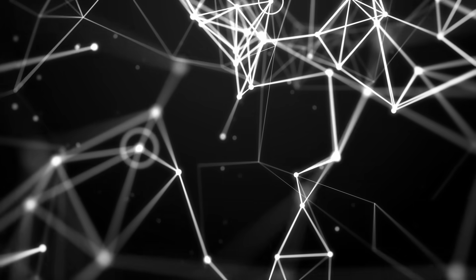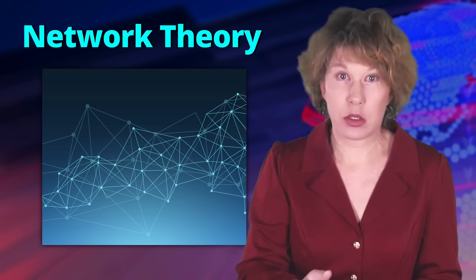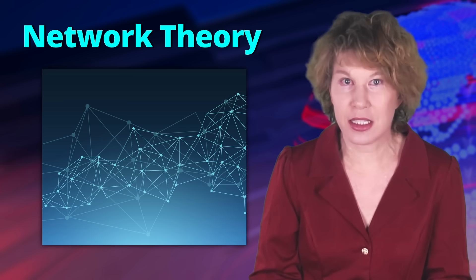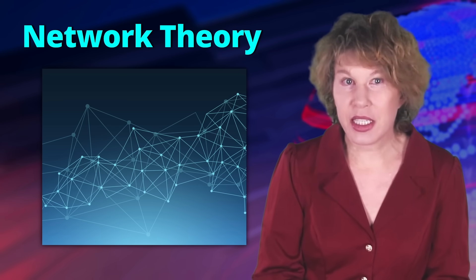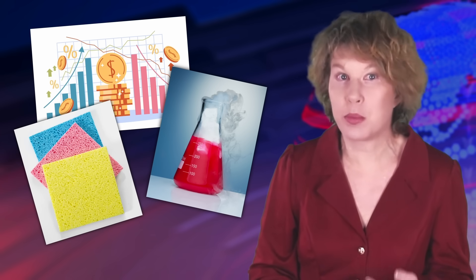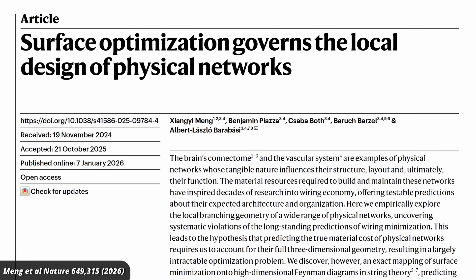This new research comes from an entirely different direction — a group who works on network theory. Not social networks in particular, but general networks: everything made of nodes connected by links. The cool thing about networks is that they describe a huge variety of things, from economics to chemical reactions to materials to blood vessels. This new paper looks in particular at biological networks like blood vessels and neurons.